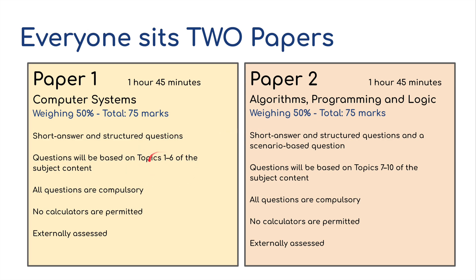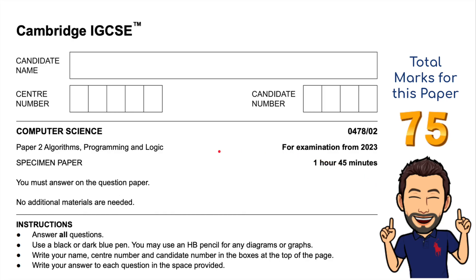Topics 1 to 6 are covered in paper 1 and topics 7 to 10 are covered in paper 2. Neither paper can you use a calculator, which is a little bit tricky for the binary stuff and the hexadecimal. This is what we will sit, examinations from 2023, an hour and 45 minutes. This is paper 2: algorithms, logic and programming, 75 marks.